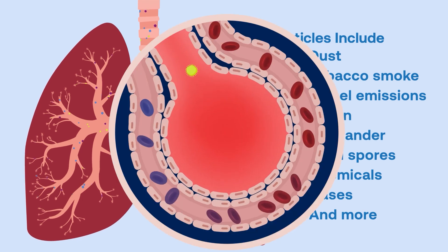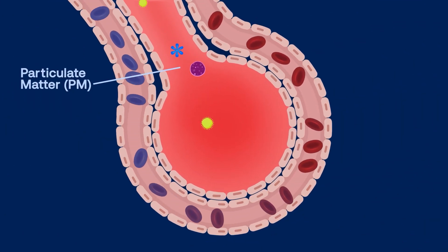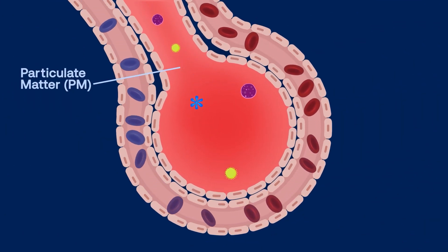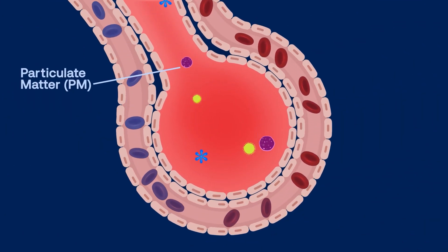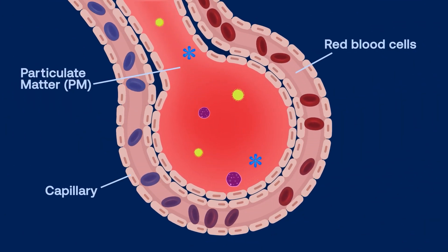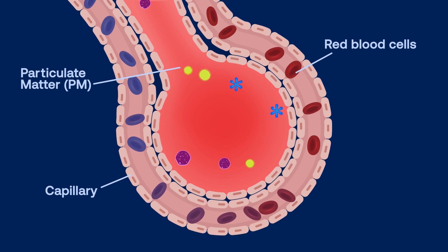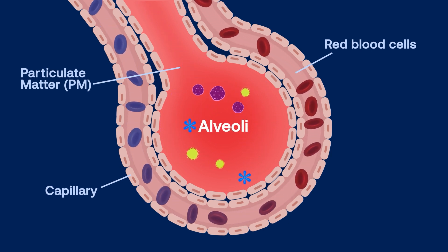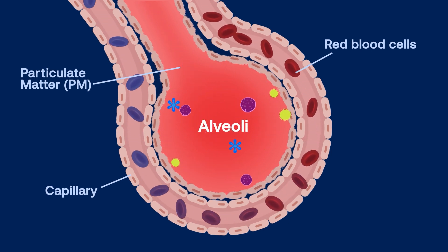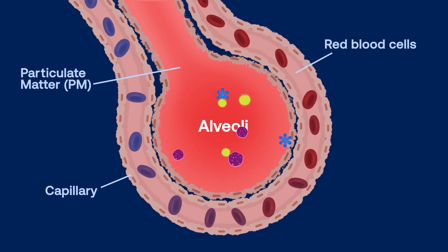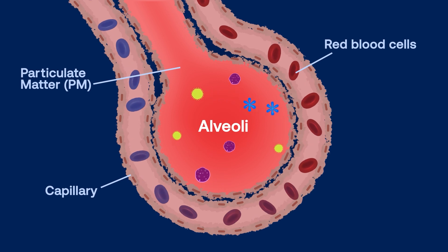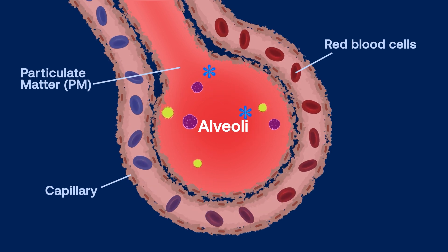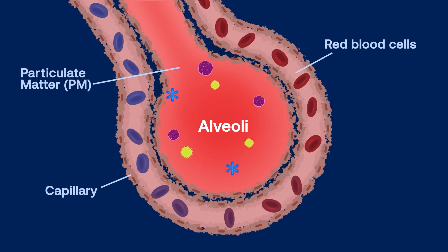Particulate matter, often written as PM, is so small it goes into the lungs all the way to the alveoli. Once there, these particles can irritate and corrode the alveoli wall, damaging the lungs and causing lung disease.